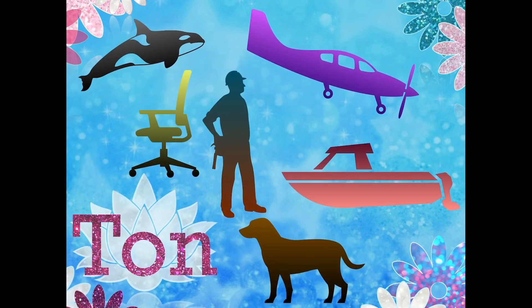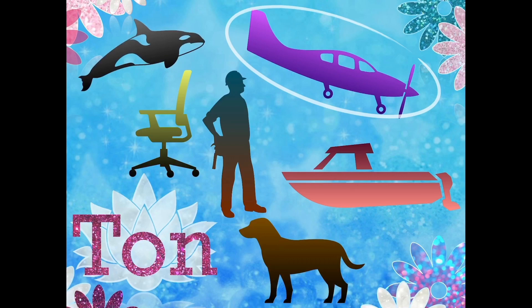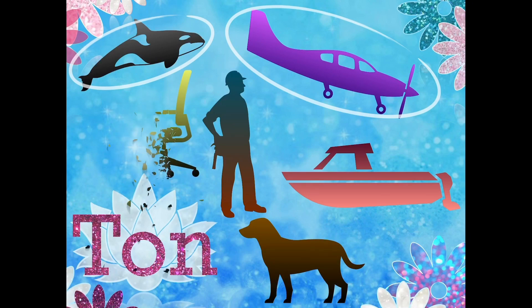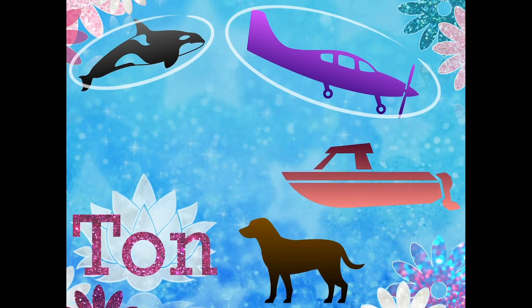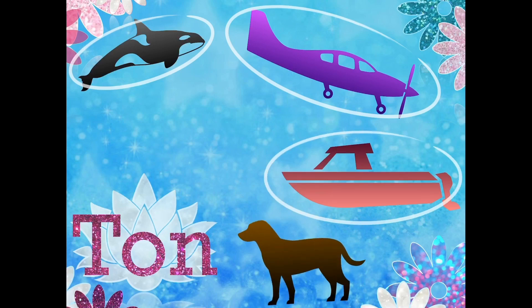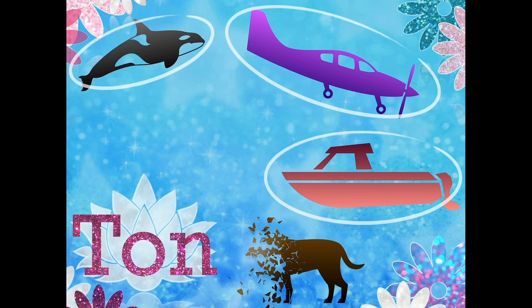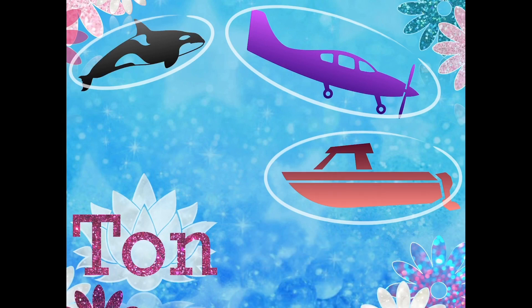Let's start with this small airplane — it's equal to one ton, I think, it's very heavy. This whale — maybe it's not the biggest whale in the world, but it's equal to one ton. What about this chair? It's not even half a ton. What about this man? No, not at all. What about this boat? Yes, it's almost equal to one ton. What about this small dog? No, you are not even close to one ton.